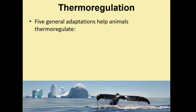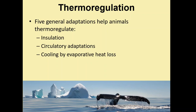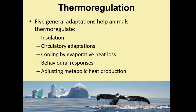We now need to look at some of the adaptations animals have to help them thermoregulate. The five main adaptations are: insulation, circulatory adaptations, cooling by evaporative heat loss, behavioral responses, and adjusting metabolic heat production. We'll go through each one in detail and I'll give you some examples of species as we work through.